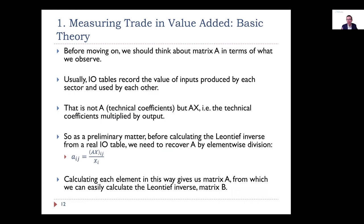A footnote on how to actually get matrix A: when we look at an input-output table supplied by ADB or other sources, they don't give us matrix A directly — they give us A multiplied by vector X. So before we can do anything mathematically, we need to do an element-wise division by X to recover the A components. Once we've divided through by X, we can calculate the Leontief inverse matrix B.